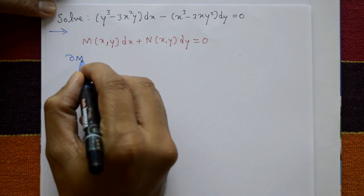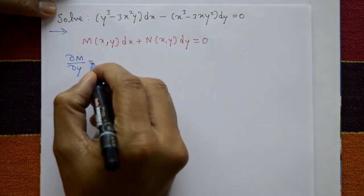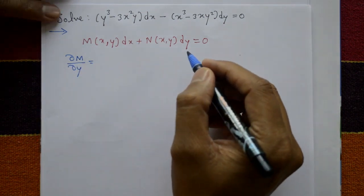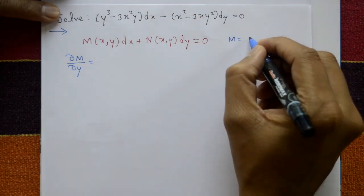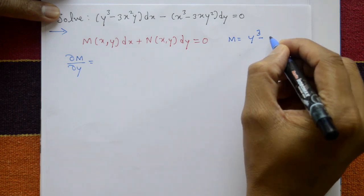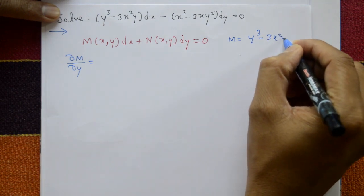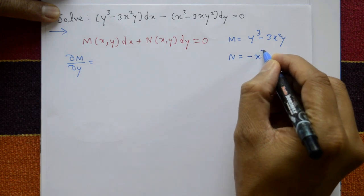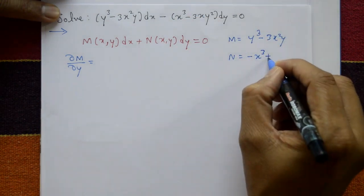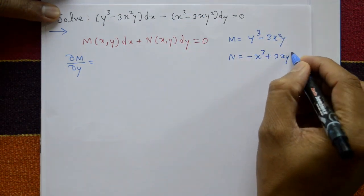Differentiate M with respect to y partially. I will write first M is equal to y cube minus 3x square y and N is equal to minus x cube plus 3xy square.